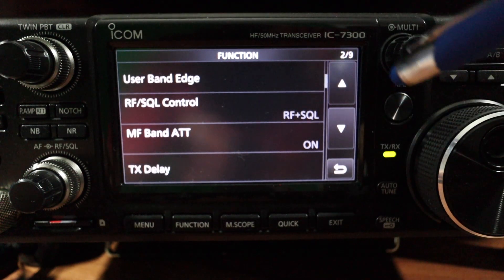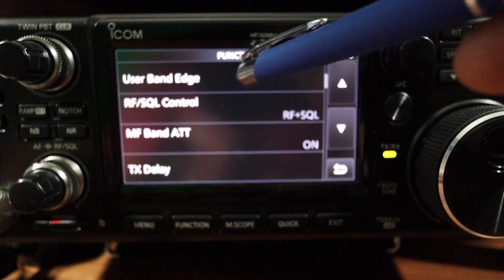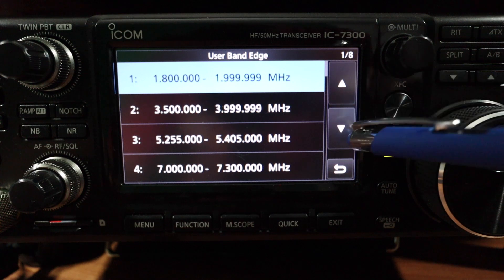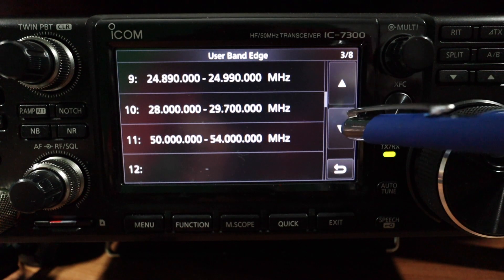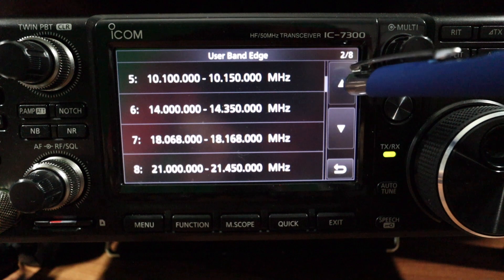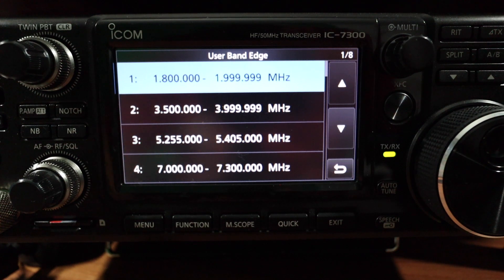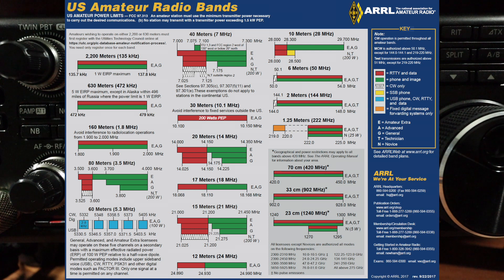On page two of nine we're going to select the User Band Edge. Currently there are eight pages — those are the frequency band edges and it's set for an Extra class privilege. Since I'm an Advanced class licensed amateur, I'm going to look at my US amateur band plan from the ARRL and put in the frequencies for my privileges.